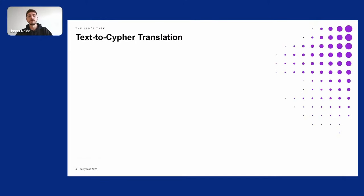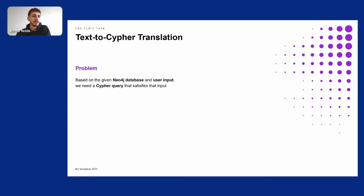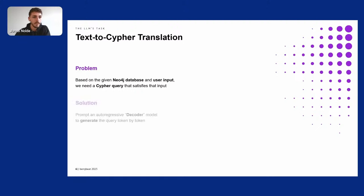The Graph Explorer I showed you probably reminds some of you of the Neo4j browser. But there's an important extra step that translates the natural language into a Cypher query. The problem we solved is that based on the given Neo4j database and the user input we need a Cypher query that satisfies that input. Our solution was to prompt an autoregressive decoder model to generate the query token by token.